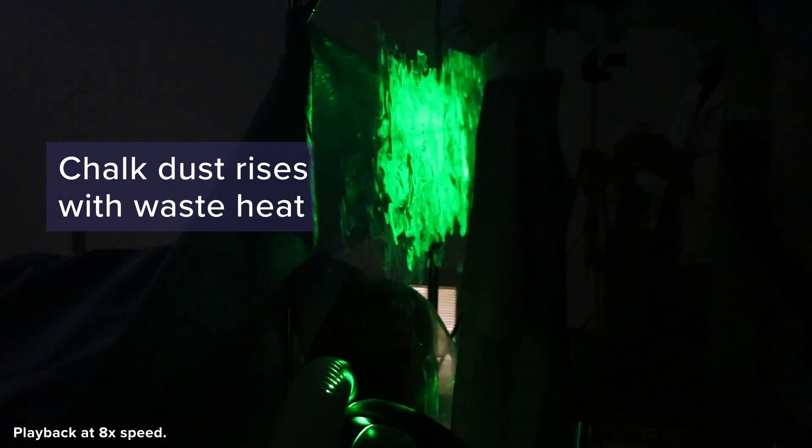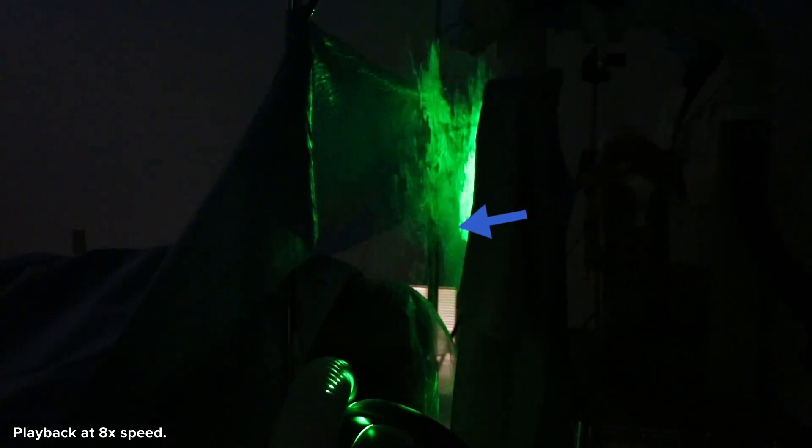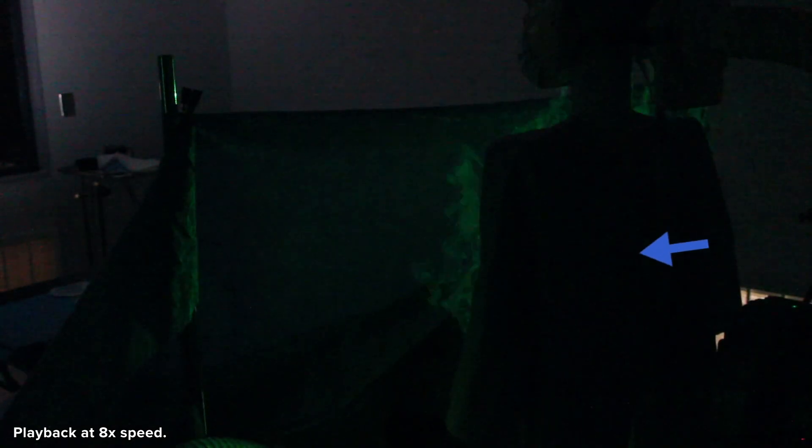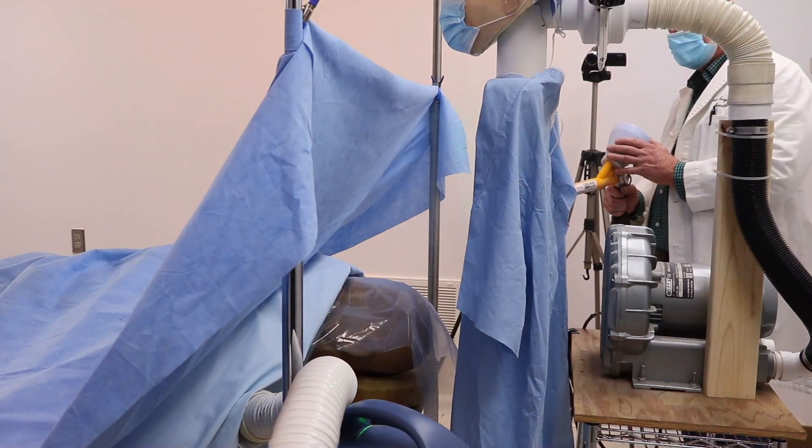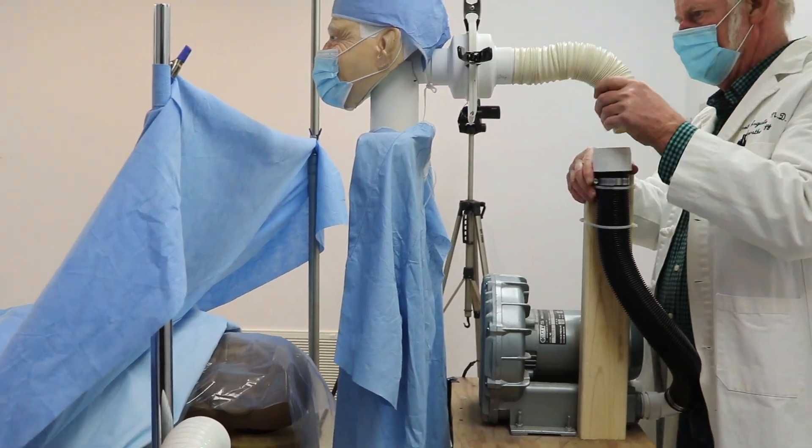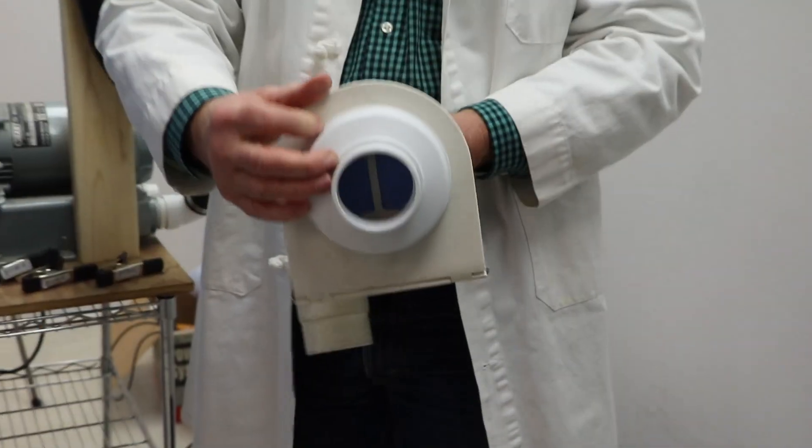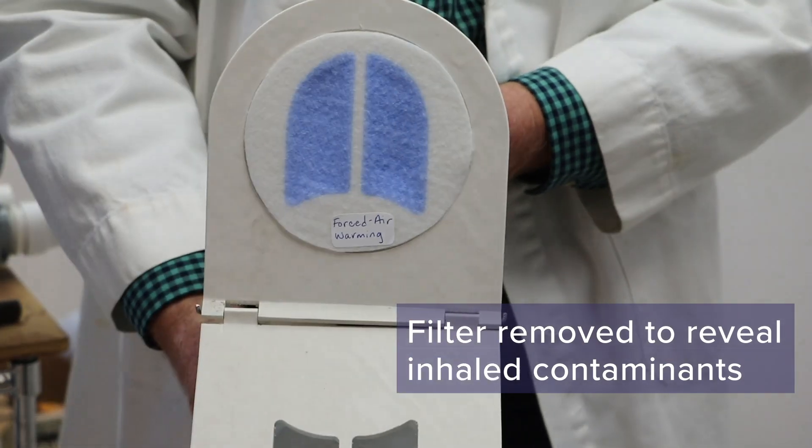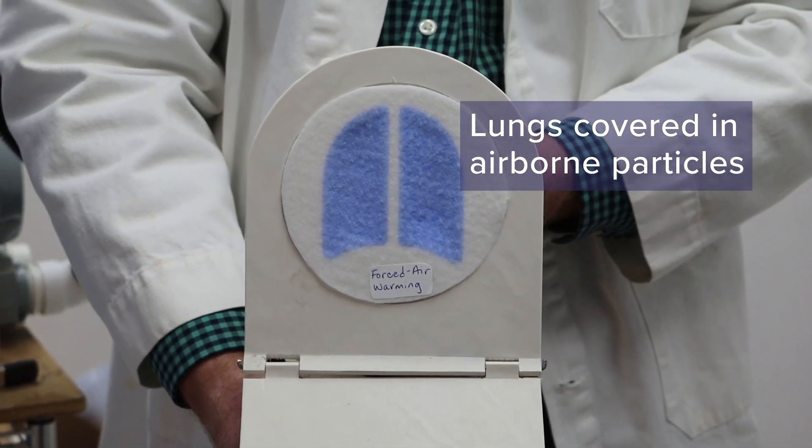The air currents of rising waste heat are easily visualized with a green laser. The filter is removed to reveal inhaled contaminants. With the forced air system on, the lungs are covered in airborne particles.